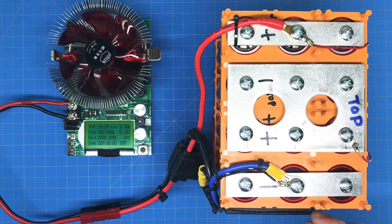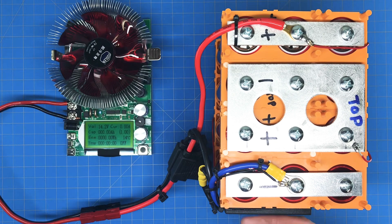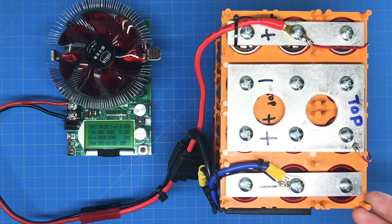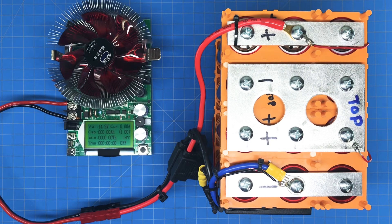If we weren't getting full calculated capacity, it could be this BMS. The BMS might not be fully top charging the batteries, or it could be cutting off a little too early. We'll see what our results are.